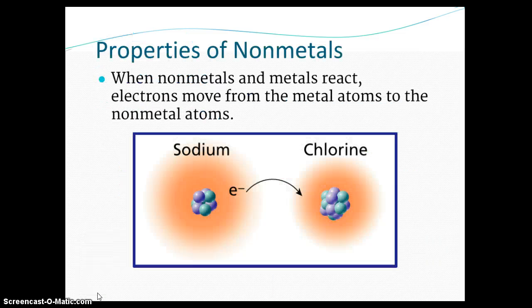When nonmetals and metals react, the electrons move from the metals over to the nonmetals. And that is always the property of nonmetals, that they're always accepting of electrons. And that's something we're going to get into next chapter, chapter 5.